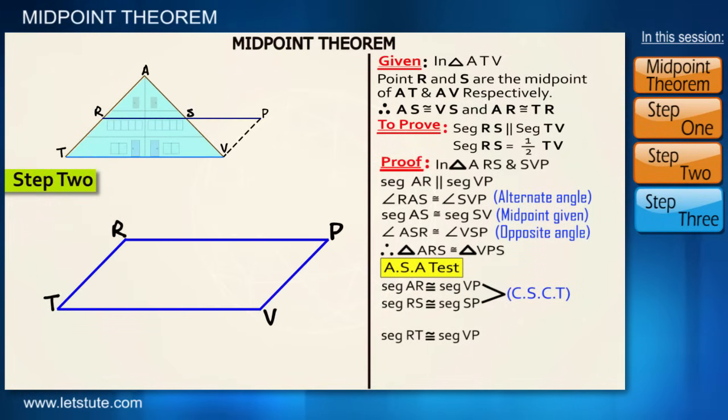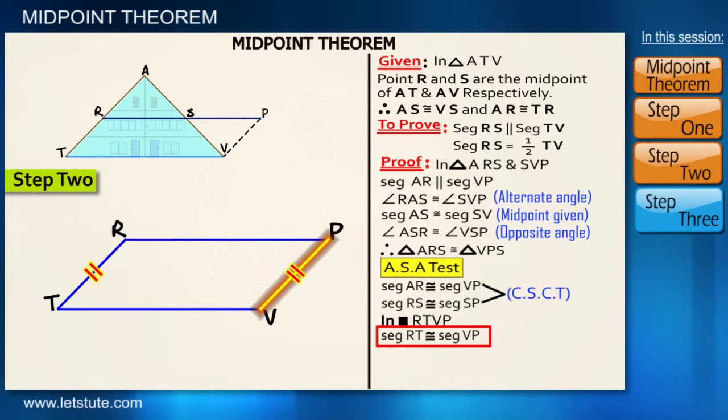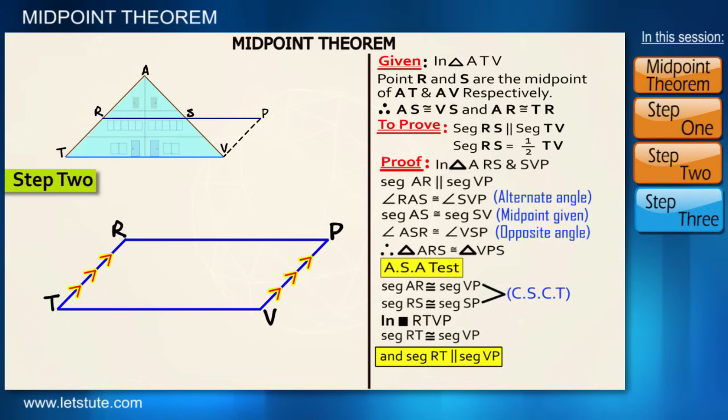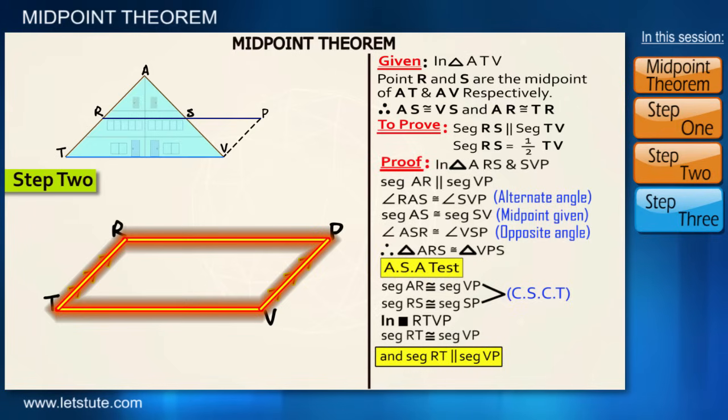In quadrilateral RTVP, RT is congruent to VP, which we just proved, and RT is also parallel to VP. So according to the property of a parallelogram, can we say that quadrilateral RTVP is a parallelogram? Yes.